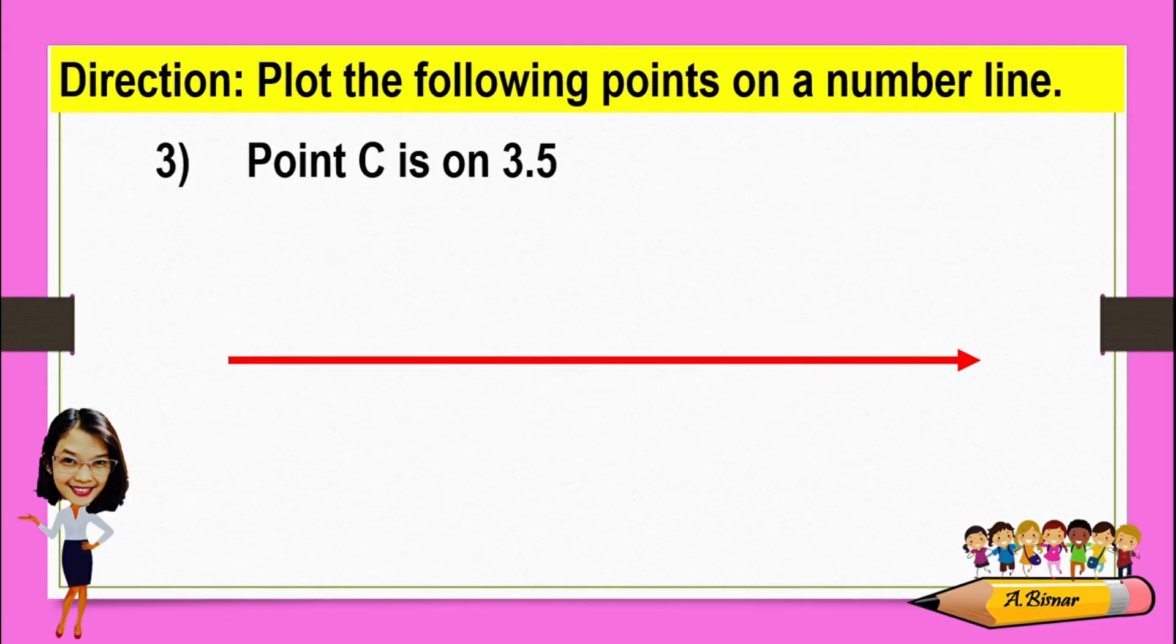Let's try number 3. Point C is on 3.5, which is properly read as 3 and 5 tenths.